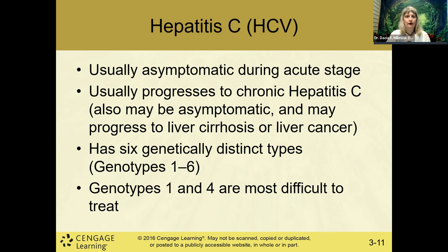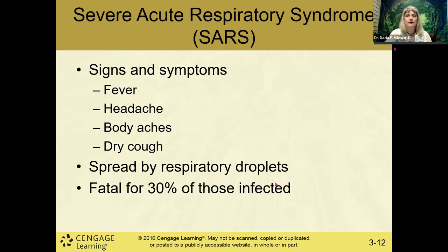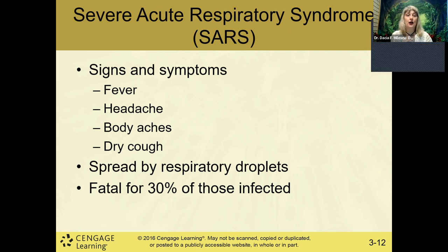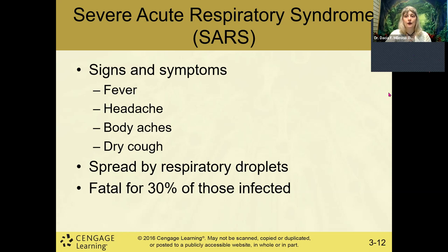SARS — severe acute respiratory syndrome — is a huge umbrella of viruses. It causes fever, headache, body aches, and dry cough, and spreads through respiratory droplets. It has a high mortality rate: 30 percent of those infected can die, meaning 70 percent recover but 30 percent do not.